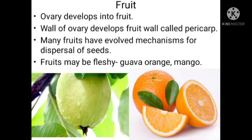Today we cover the topic 'fruit' from the chapter 'Sexual Reproduction in Flowering Plants.' The mature ovary is called a fruit. After fertilization, ovules develop into seeds, and at the same time, the ovary develops into the fruit. So when the ovule matures into a seed, the fruit develops from the ovary simultaneously.